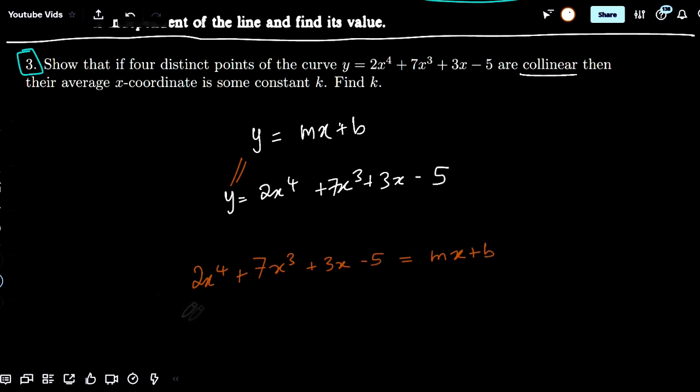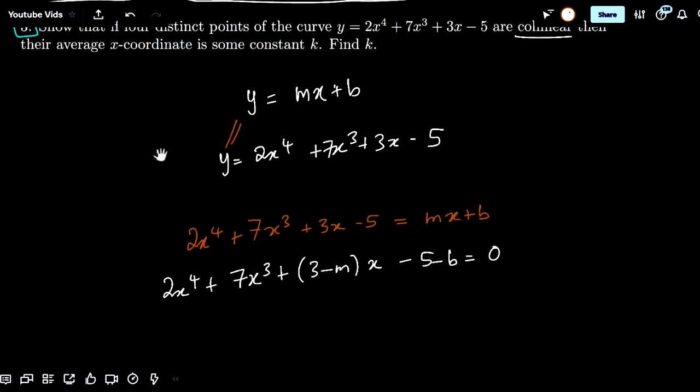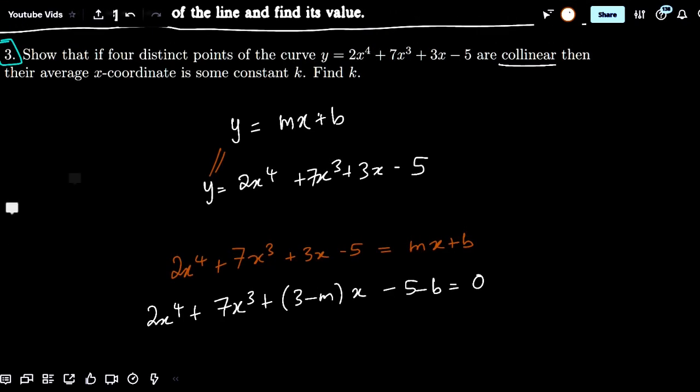We can simplify this quartic equation a bit more to get 2x to the 4 plus 7x cubed plus 3 minus m times x minus 5 minus b equals 0. And the solutions to this quartic equation correspond to the points that lie on the curve and on the line.